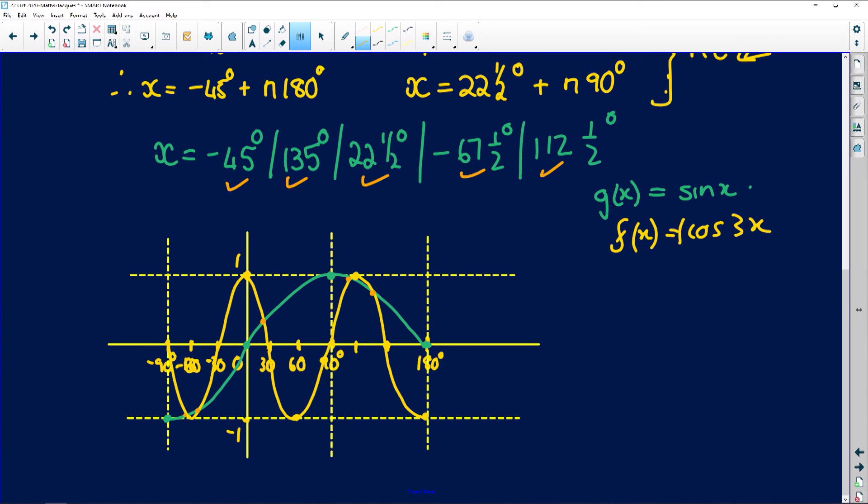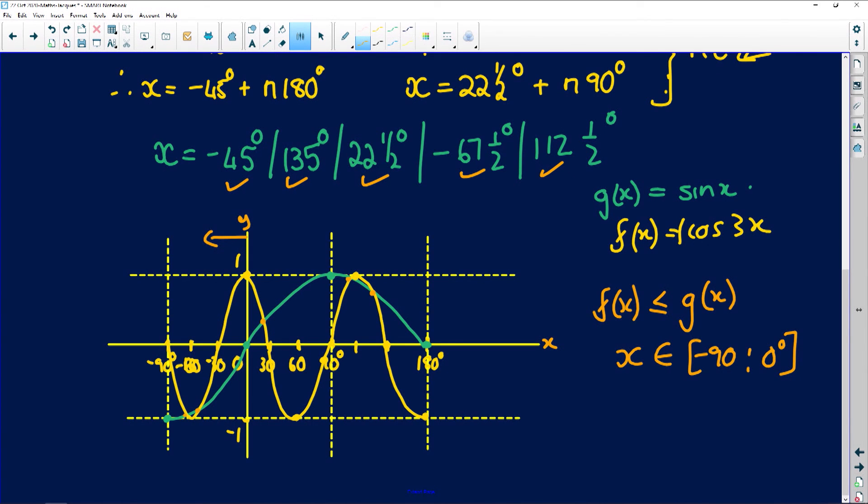So the last part of Gwasington's question is asking us to write down where f of x is smaller or equal to g of x and only for the domain minus 90 inclusive and 0. So, we're looking on the negative side. We're looking on this side of the y-axis. And there's our x-axis. And we're looking at where the green graph is smaller than the yellow graph, rather, is smaller than the green graph. So, where f lies below g, below it, then it's less than. So, where is cos below sine?